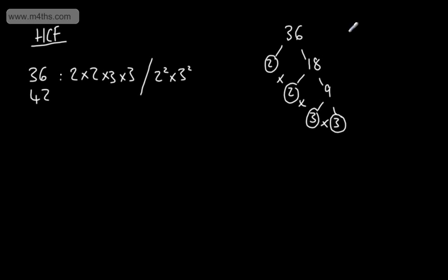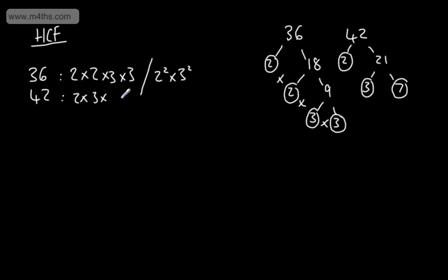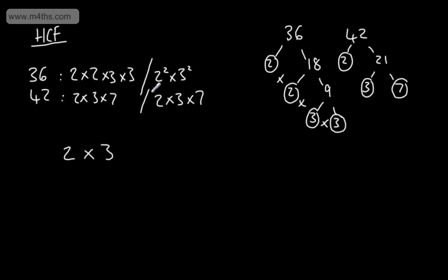If we now prime factorize 42: divide by 2 to get 21, divide by 3 to get 7. So 42 = 2 × 3 × 7. To find the highest common factor, we look at the two lists and take each number that appears in both lists. We can see that's 2 and 3 — 7 doesn't appear in the first list. We must take each to the lowest power: 2 to the power of 1, and 3 to the power of 1. So the highest common factor of 36 and 42 is 6.